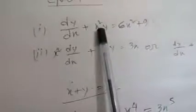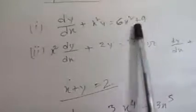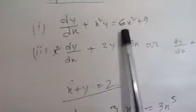For example, this x square is the function of x and 6x square plus 9 also is a function of x and it is not multiplied with dy/dx.